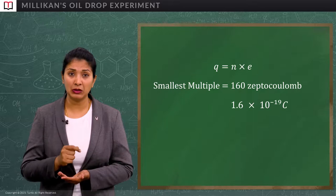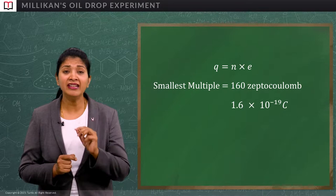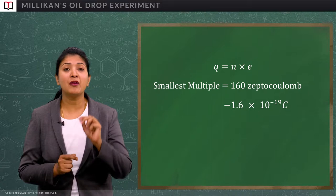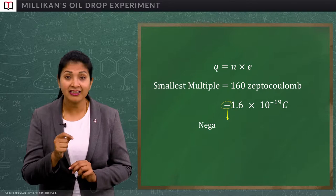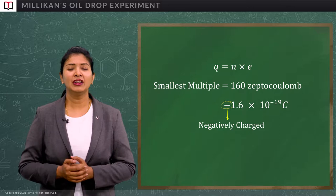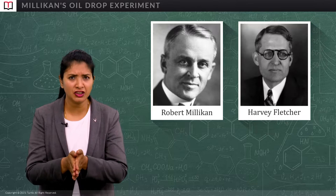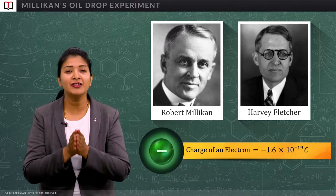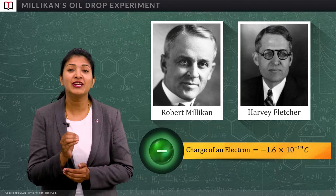So, that is why he came to know that the charge on an electron is 160 zeptocoulomb, which can also be written as 1.6 into 10 to the power minus 19 coulomb. But over here, as it is for electron, I will write it as minus 1.6 into 10 to the power minus 19 coulomb. The minus is because it is negatively charged. So, thanks to the work done by Millikan and Fletcher, we finally have the value of charge of an electron which is minus 1.6 into 10 to the power minus 19 coulomb.